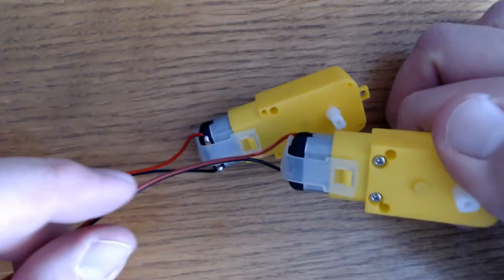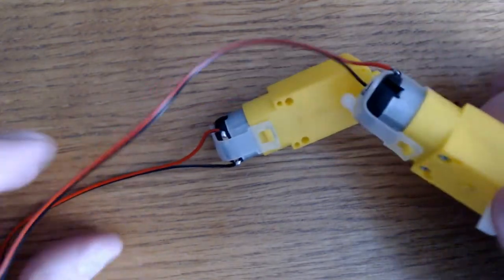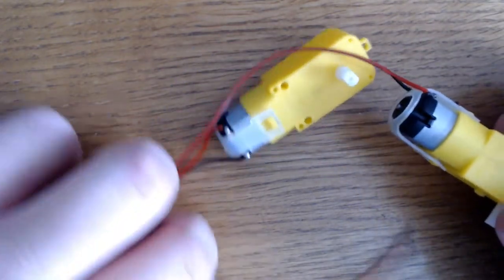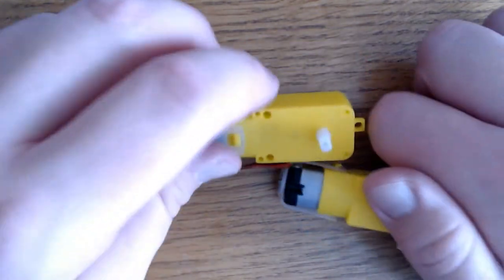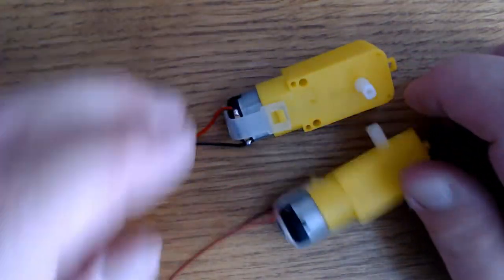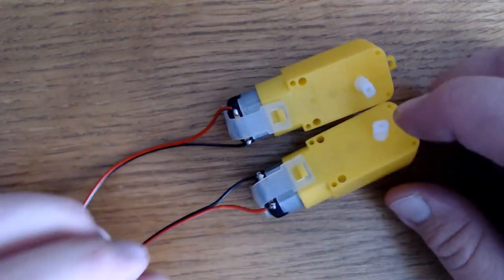Now I use red 24-gauge wire for positive, and black 24-gauge wire for negative. The positive and negative connection on one motor should be the exact opposite of the connection on the other motor, if you want the thing to go forward.